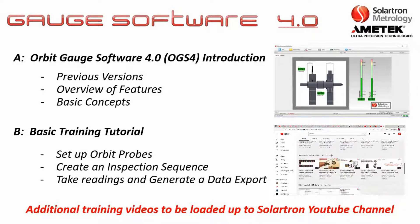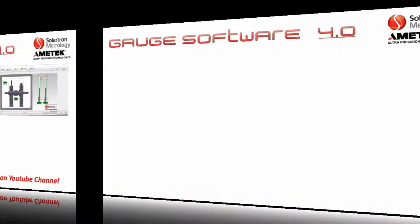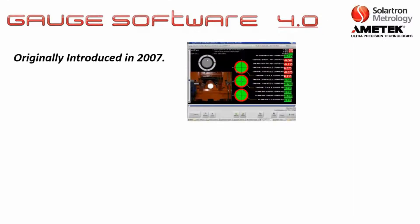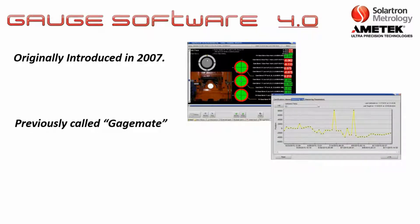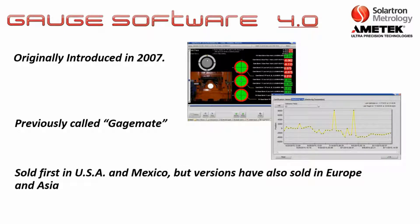Orbit Gauge Software 4.0 was originally introduced in 2007, so it's been around about 15 years. It was previously called Gauge Mate as well as Gauge Soft. This is a software package that was first sold in the USA and Mexico, but versions have also been sold globally in Europe as well as in Asia.